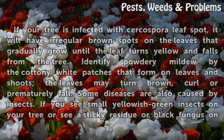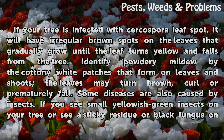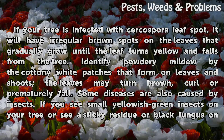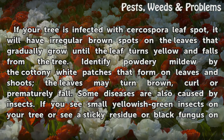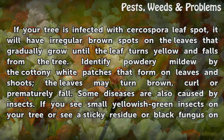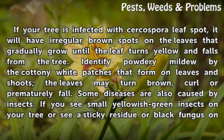Effects: If your tree is infected with Cercospora leaf spot, it will have irregular brown spots on the leaves that gradually grow until the leaf turns yellow and falls from the tree. Identify powdery mildew by the cottony white patches that form on leaves and shoots; the leaves may turn brown, curl, or prematurely fall.